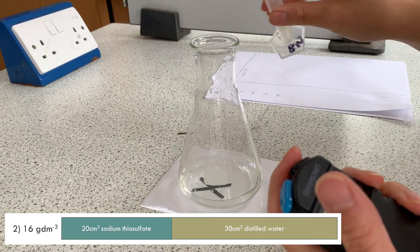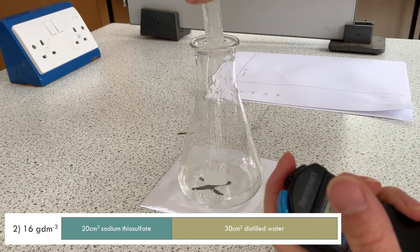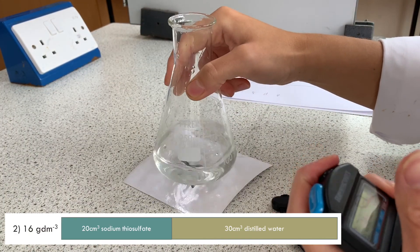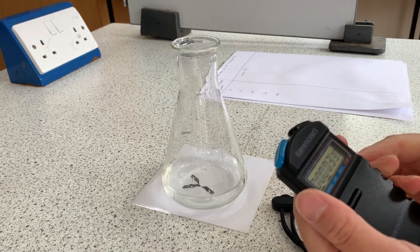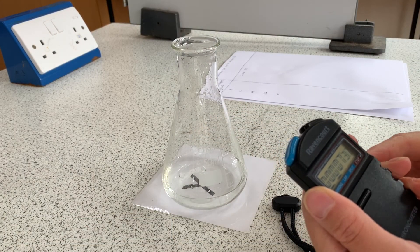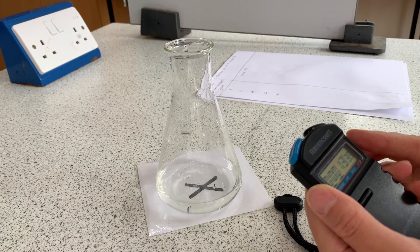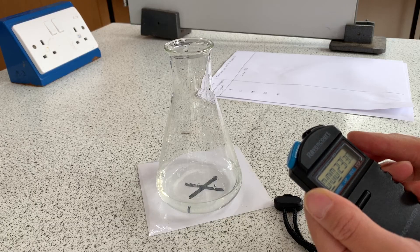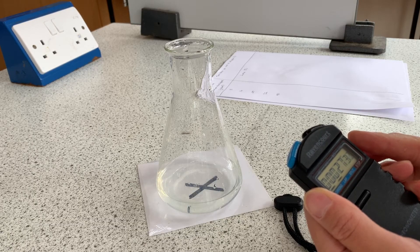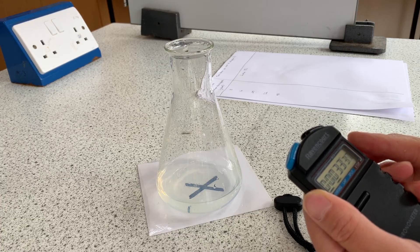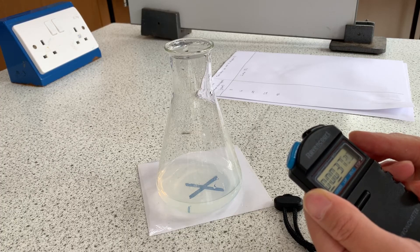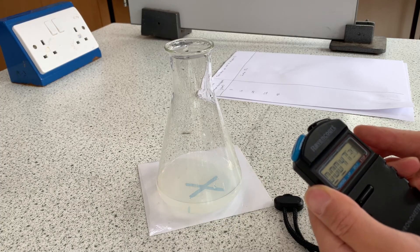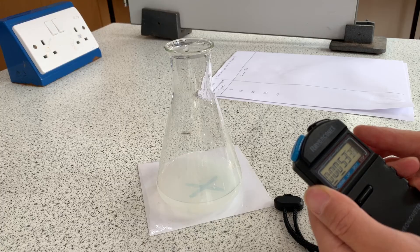Now onto the 16 grams per decimetre cubed solution. I made this by mixing 20 centimetres cubed of sodium thiosulfate with 30 centimetres cubed of distilled water. You saw me adding the 10 centimetres cubed of hydrochloric acid, swirling the conical flask, and starting the timer. Now this reaction is going to go slightly faster as I'm using a more concentrated sodium thiosulfate solution. However, this video is still slightly sped up. Again, stop the timer when you've judged that the cross can no longer be seen. This may be tricky, but just try and make sure you get it at a similar point of disappearance for each reaction.